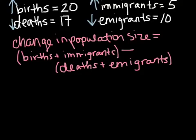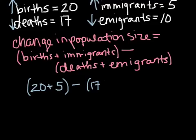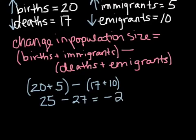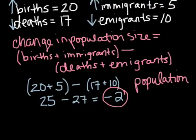So in this example, we would say 20 plus 5, so that's our number of births and then immigration, minus 17 plus 10. So that's 25 minus 27. So that gives us a value of negative 2. So that means during that year, the population decreased by 2 rabbits.